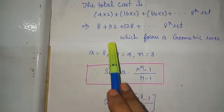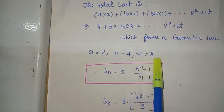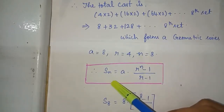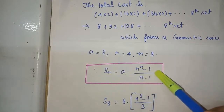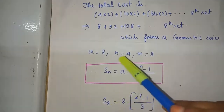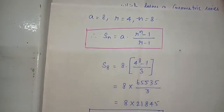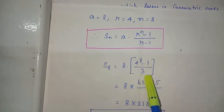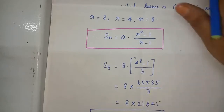The geometric series has first term a = 8, common ratio r = 32 ÷ 8 = 4, and n = 8. So S8 = a × (r^n − 1) / (r − 1) = 8 × (4^8 − 1) / (4 − 1) = 8 × 65,535 / 3.